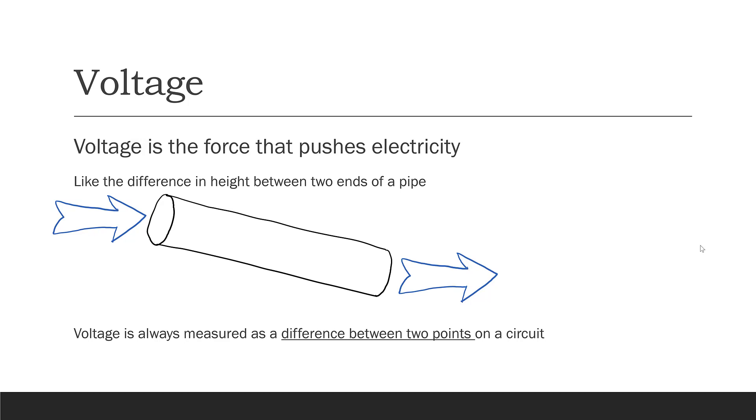Voltage is always measured as a difference between two points on a circuit, just like you would measure the difference in height between the two ends of the pipe. Current is measured at one single point at a time. Voltage is always measured as a difference between two points. And the unit of voltage is volts, and that's abbreviated with a V.